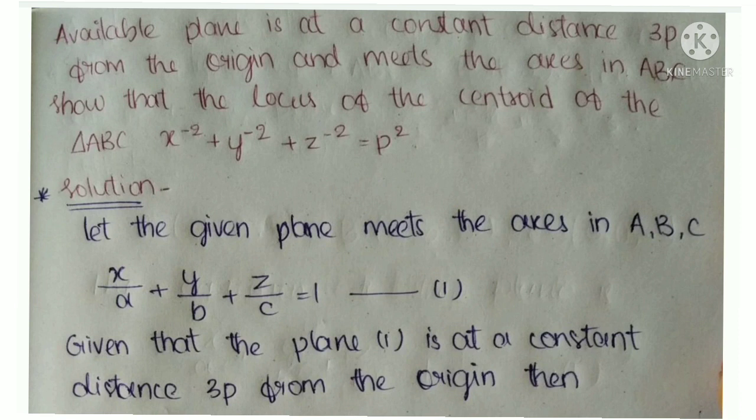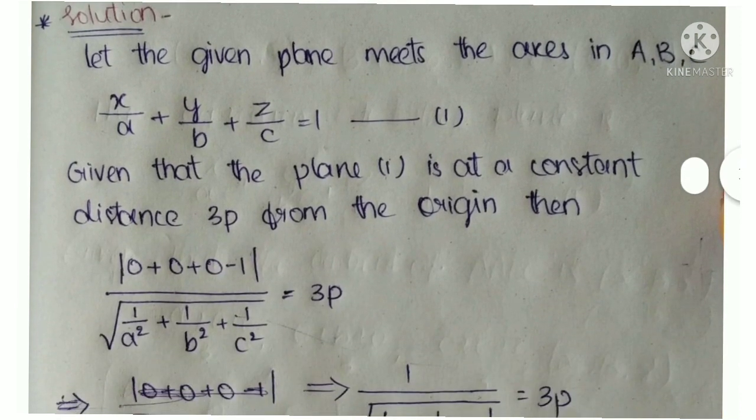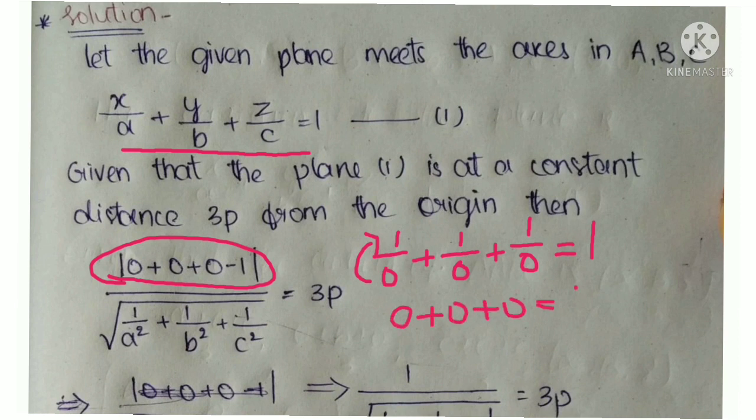Substituting into the distance formula: |1·0 + 1·0 + 1·0 - 1| divided by sqrt(1/a² + 1/b² + 1/c²) = 3p. This simplifies to |0 + 0 + 0 - 1| divided by the denominator equals 3p.